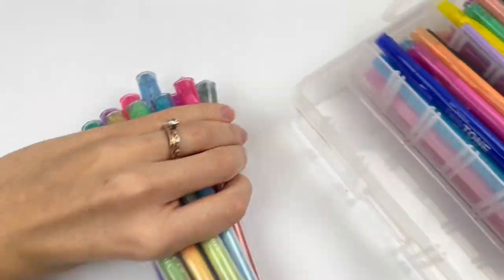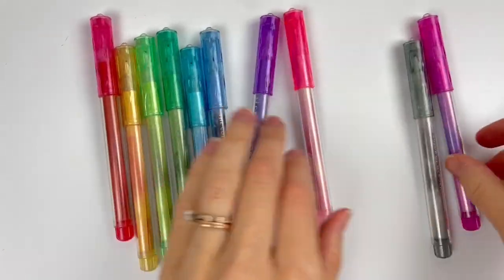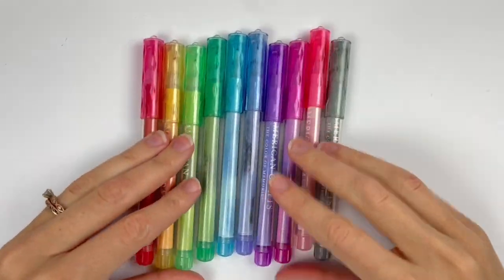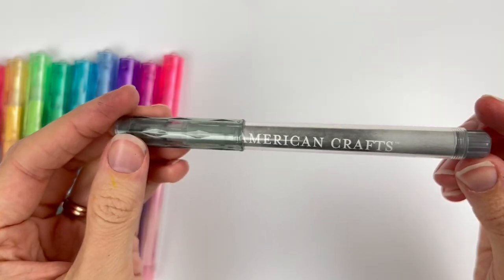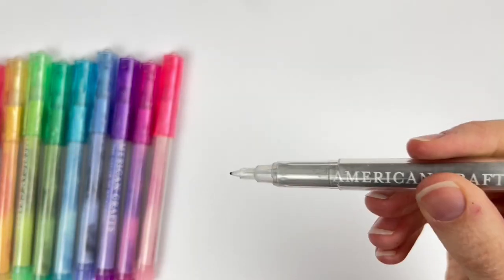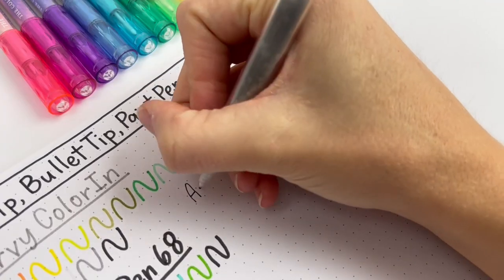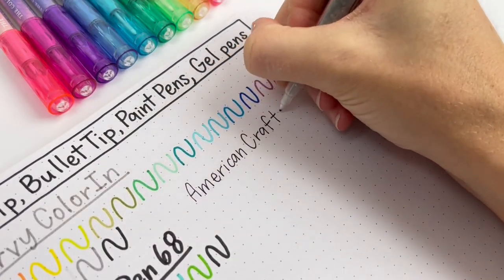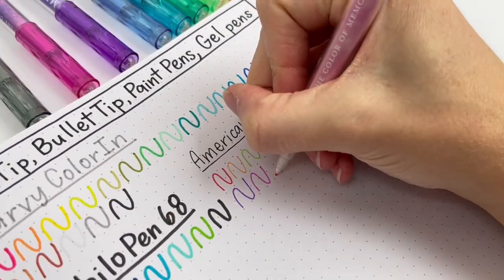These next ones are from American Crafts. I think I got them from Tuesday Morning or TJ Maxx. They just look so pretty, and I love the diamond on the top of the lid. There's nothing special about how they write. They're just pretty, and they're fun to write with, so I'll transfer them to a clear plastic case and see if that helps me use them more, or maybe I'll be decluttering them in a few months. We'll see.